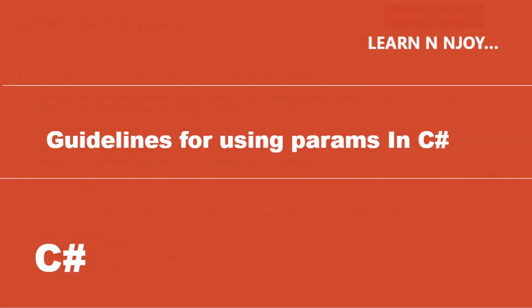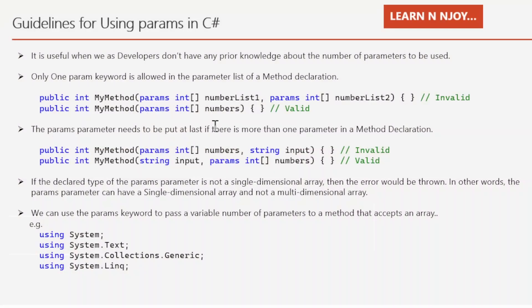Now let's discuss the guidelines for using params in C#. Guideline one: it is useful when we as developers don't have any prior knowledge about the number of parameters to be used. Imagine a scenario where you write an add method accepting two parameters — that's fine. But if later you need three-number addition, then four, then five, writing that many overloaded methods is painful. That's where params helps, since it accepts zero or more arguments.